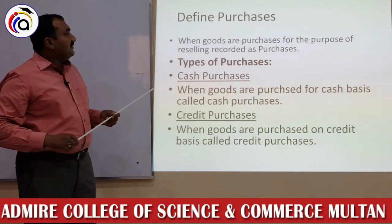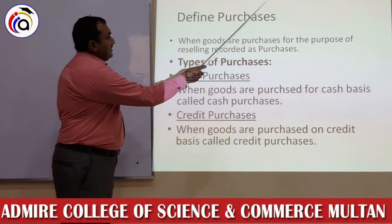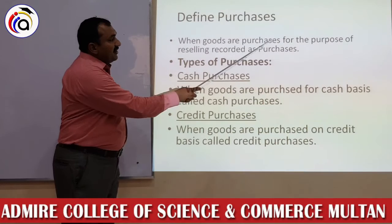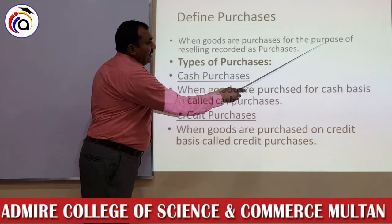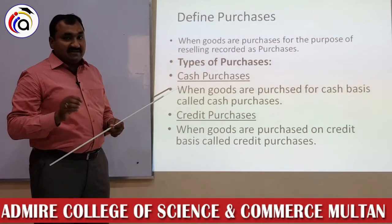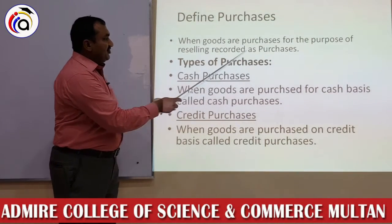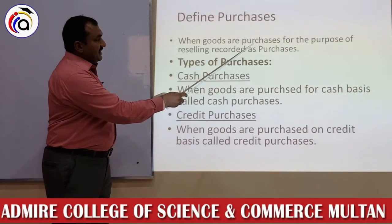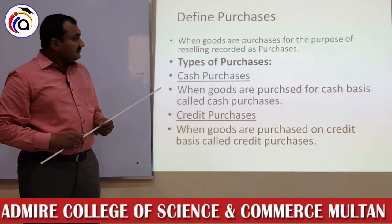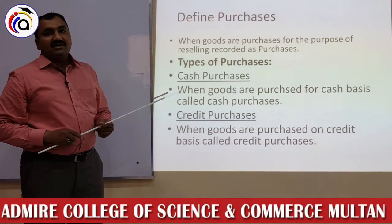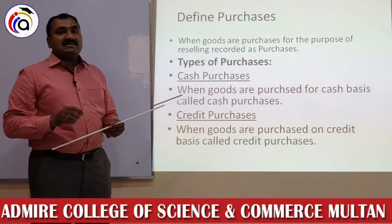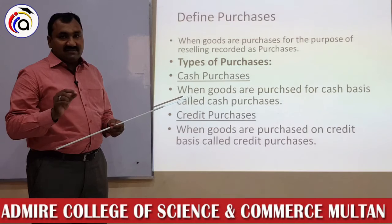Abhi humne discuss kiya tha Sales ko, ab hum discuss karenge Purchases ko. Karobar mein hum khareedete bhi hain aur bechte bhi hain. When goods are purchased for the purpose of reselling — ye word bahut important hai: 'purpose of reselling'. Wo tamam cheezein jinko hum dubara bechne ke maqsad se khareede hain, wo karobar mein Purchases ke naam se darj hoti hain. For example, aapne furniture khareeda aur aapka business hai furniture sale karne ka — to wo aapka Purchases hoga. Agar aapne furniture office ke liye liya hai, tab wo Purchase nahi kahlayega, tab wo Assets kahlayega. Agar koi bhi cheez aap dubara bechne ke maqsad se khareeden ge, wo Purchase hai.